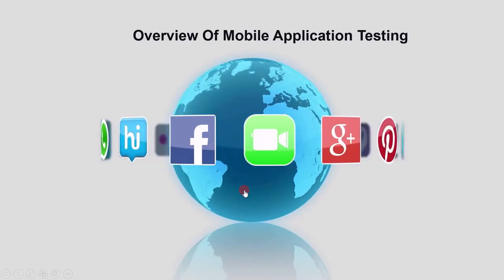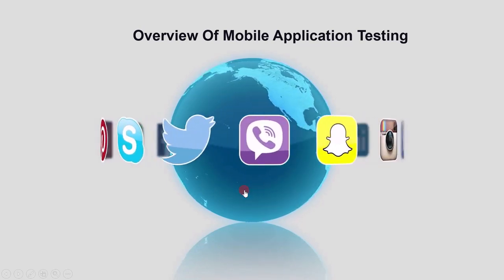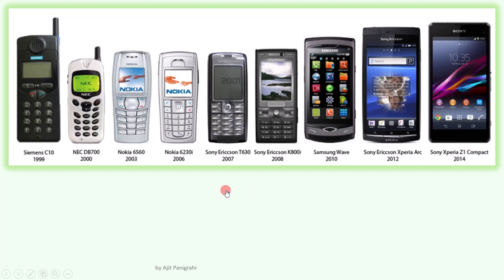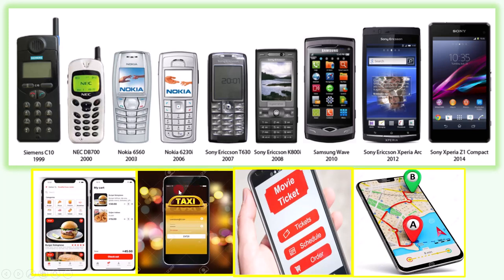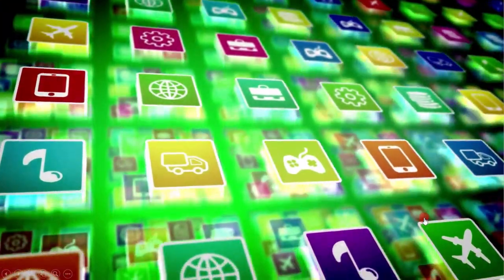Now let's see the last topic of this lecture: overview of mobile application testing. As we know, today mobile phones have evolved from simple communication devices to a gadget that can basically do everything. Whether it be ordering food, availing a cab service, booking movie tickets, or simply looking for directions, it can all be done using a mobile phone. This is only possible due to the wonderful world of mobile applications.